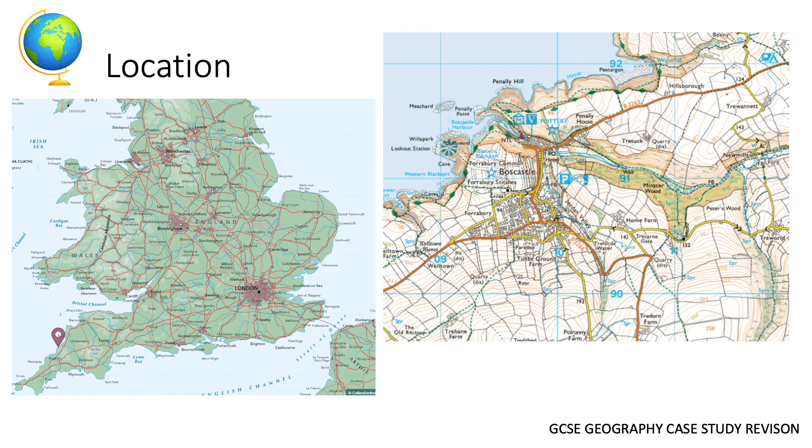Boscastle is found in the south west of England in the county of Cornwall, west of London.